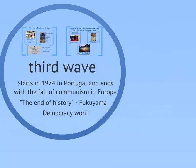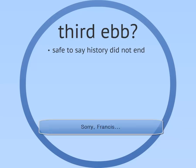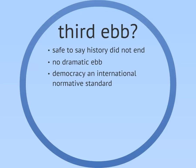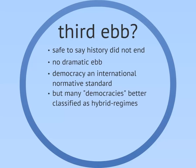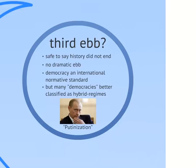So has there been a third ebb? This is debatable, and the borders of the third wave are not really well defined, with some arguing that it is still ongoing. Still, it is safe to say that history did not end, as liberal democracy faces plenty of challenges today. There was no dramatic ebb, and democracy is a widely popular international standard that even dictators try to pay lip service to. Many of the so-called new democracies never got to a very high level of democracy — some are democracies with significant problems, such as delegative democracies, and many are probably best described as hybrid regimes like electoral authoritarianism. One prime example is Russia, which seemed to be on the path towards democratization in the 1990s, but saw the process derailed by what we used to call Putinization, as Vladimir Putin and his allies consolidated power around themselves.